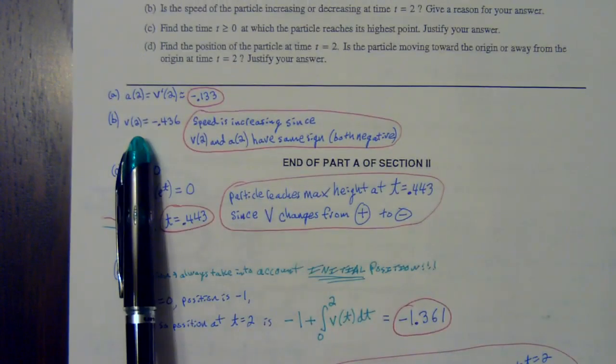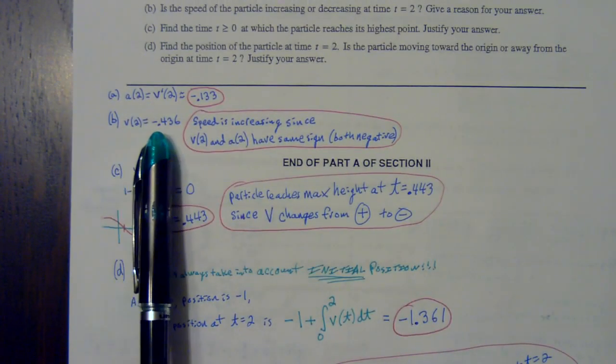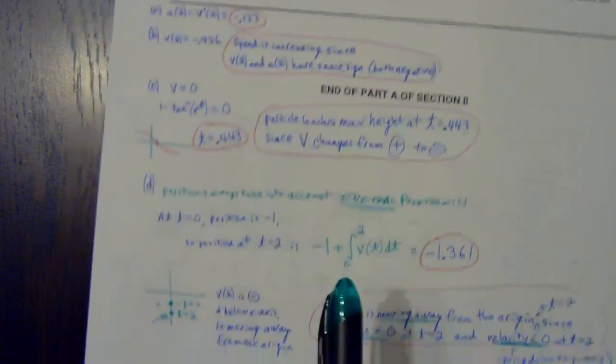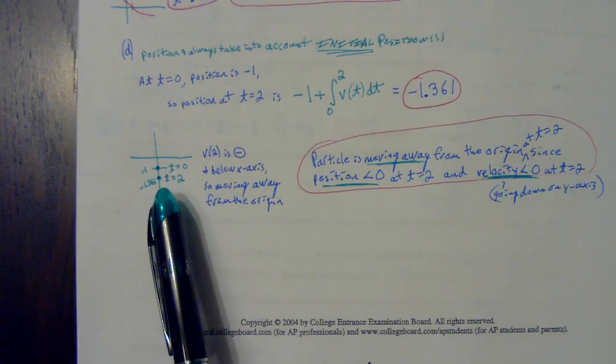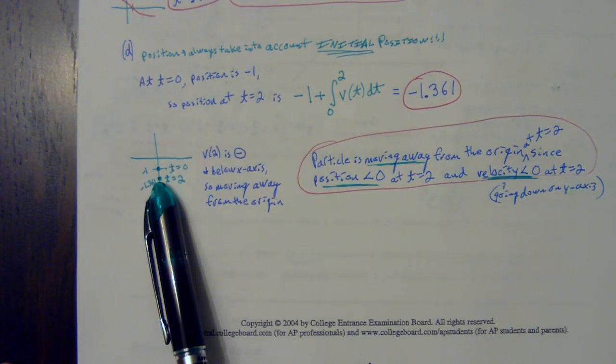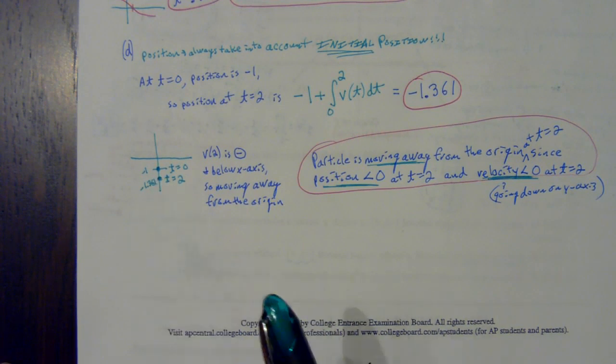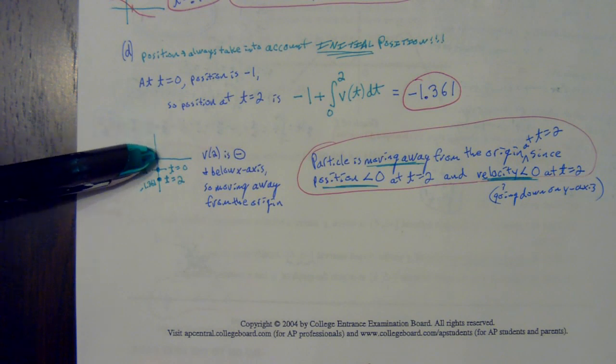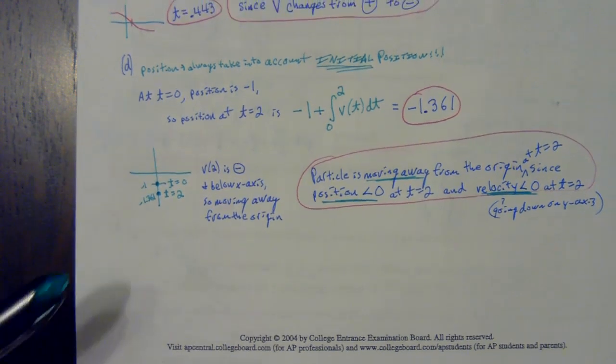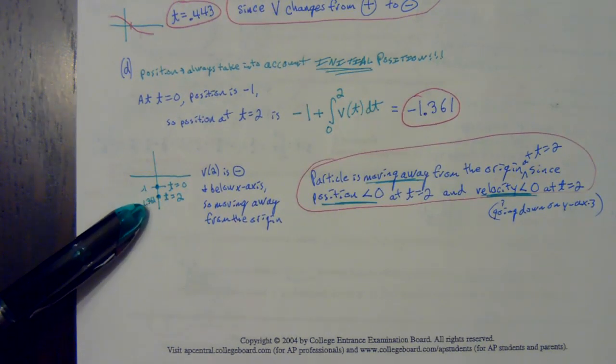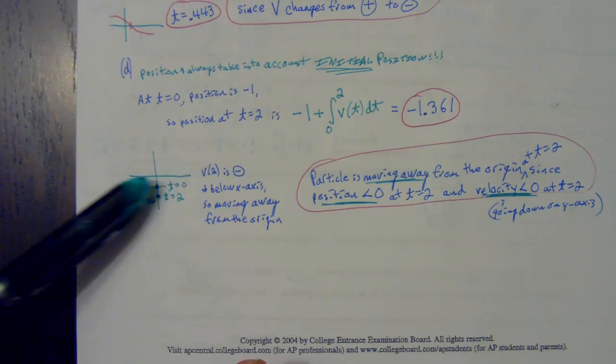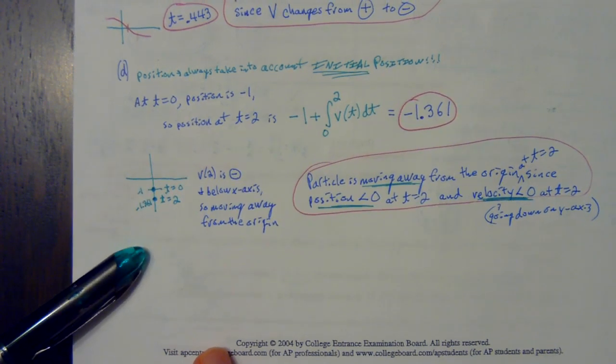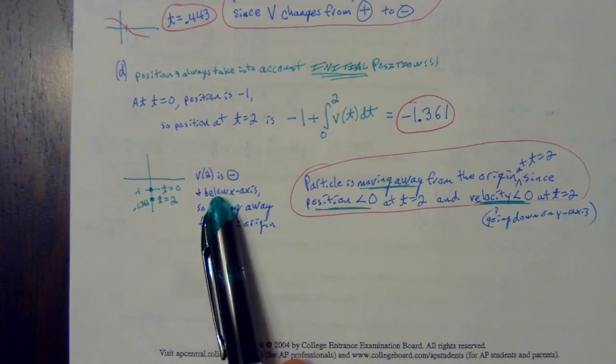You also calculated in part B that your velocity at two was negative. When your velocity is negative, that means you're going down, you're decreasing. If I'm already starting right here and my velocity is negative, it means I'm going down. That means I'm going away from the origin. If my position would have been up here and my velocity is negative, when I'm going down towards that origin, then I'm getting closer to the origin. Since my position is below the x-axis, my position is negative and my velocity is also negative, which means I'm further going down, I'm going away from that origin.